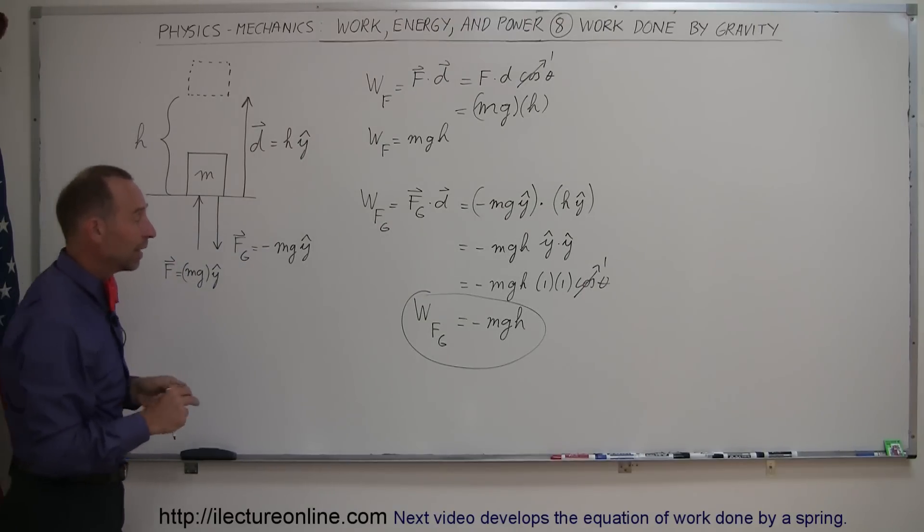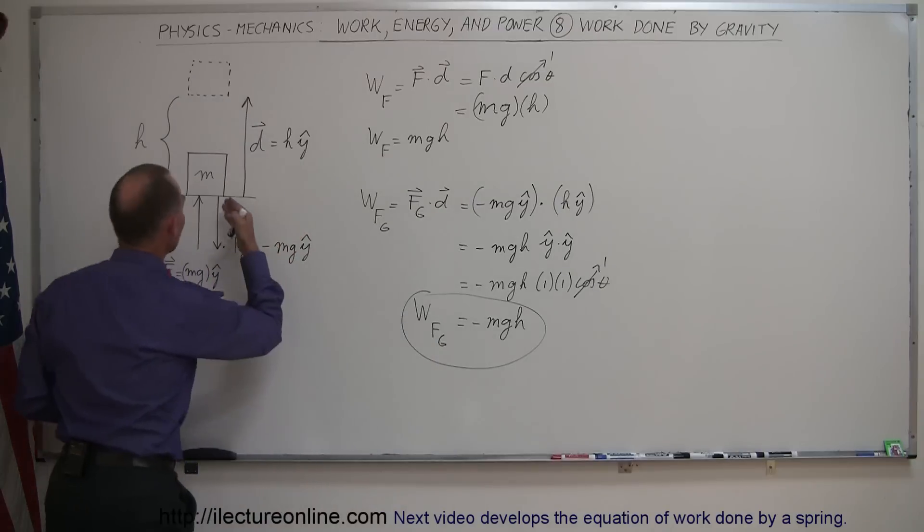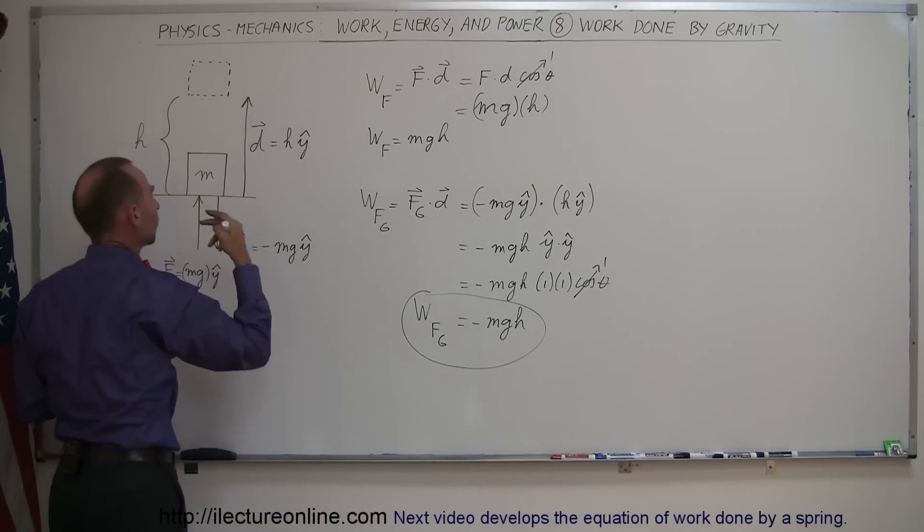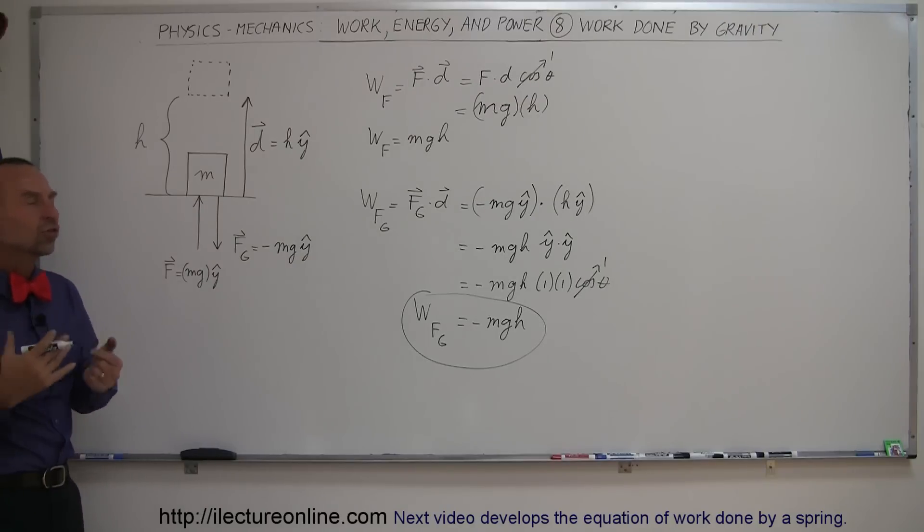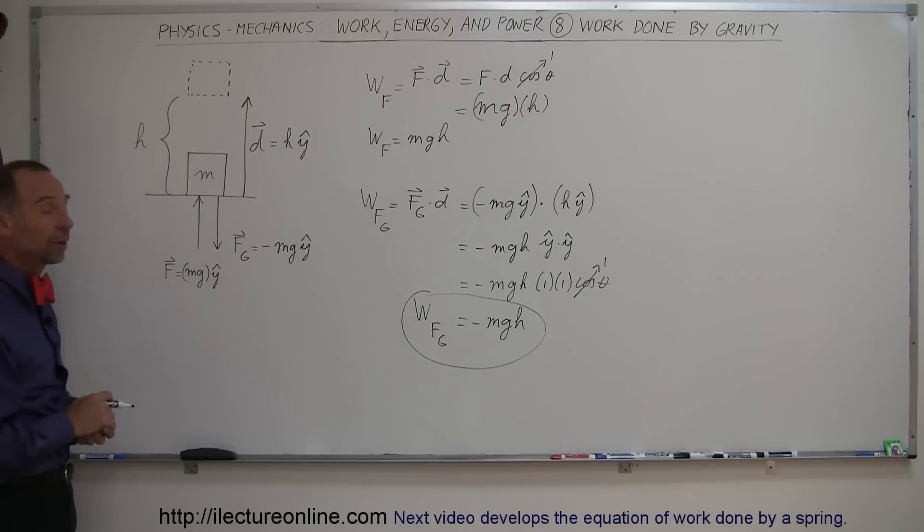And the amount, the absolute value of it, is exactly the same as the work done to get it to that height at a constant speed without acceleration. So hopefully that explanation helps you understand what we mean by the work done by gravity, and why it's negative.